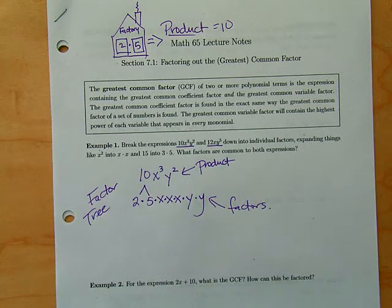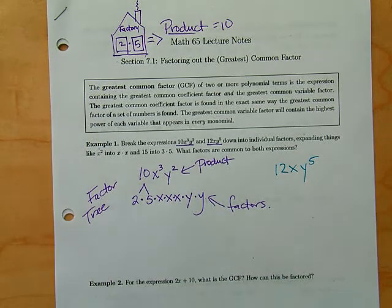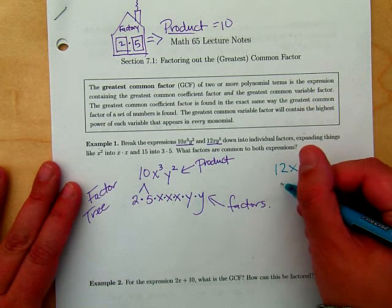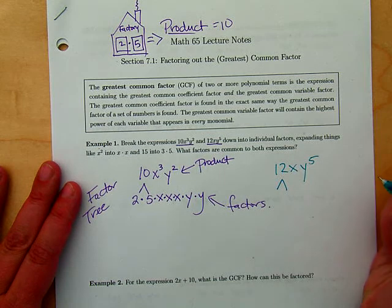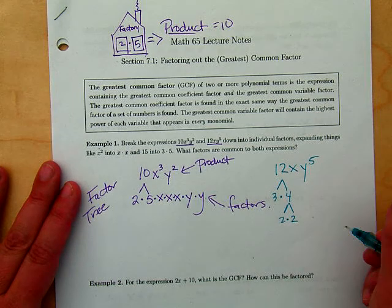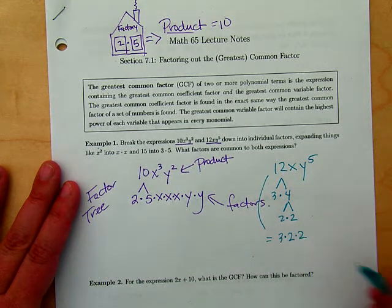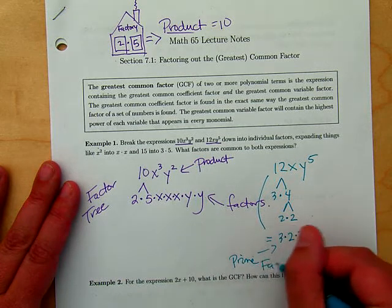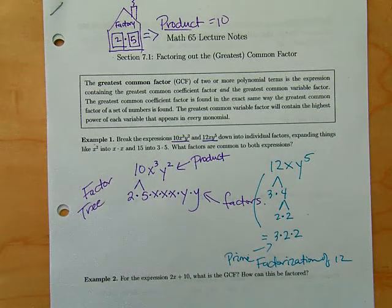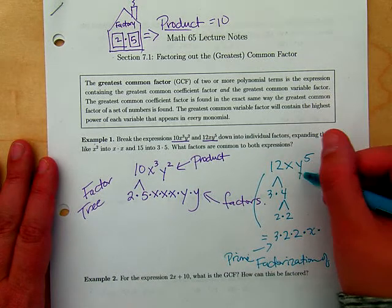Now let's do 12xy⁵. What are the factors? We might use a factor tree to factor 12 into its prime factors. 12 equals 3 times 4, and 4 equals 2 times 2, so the prime factorization of 12 is 3 times 2 times 2. The factors of x is just x. The factors of y⁵ are five y's multiplied together.